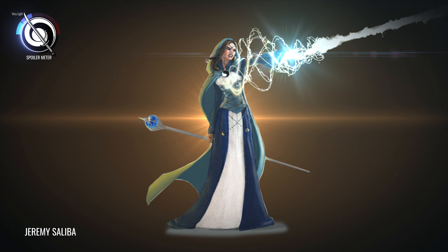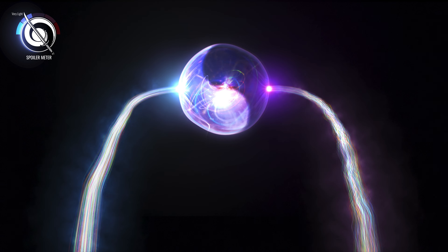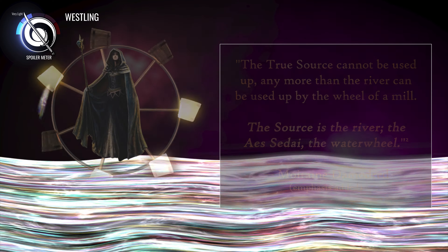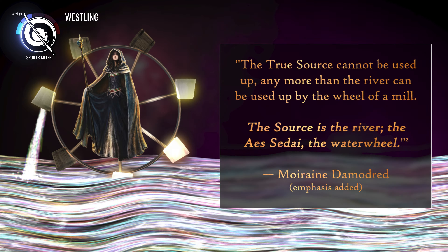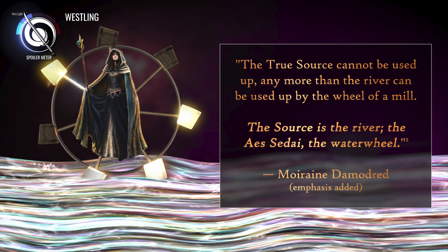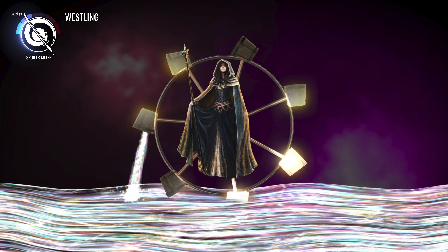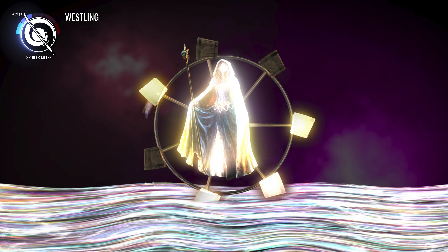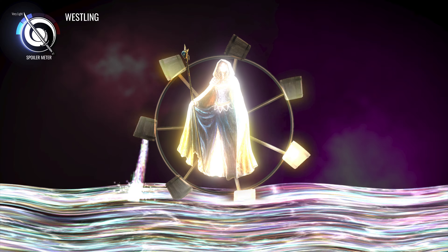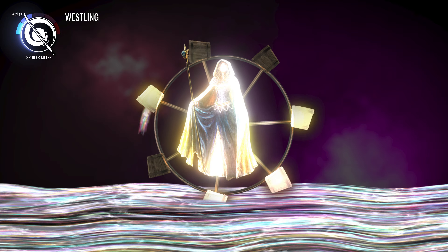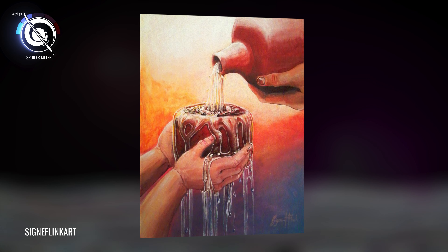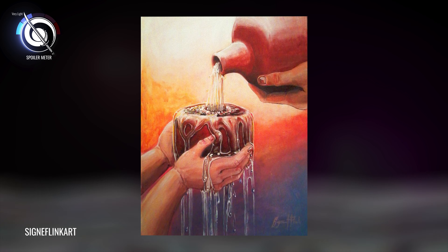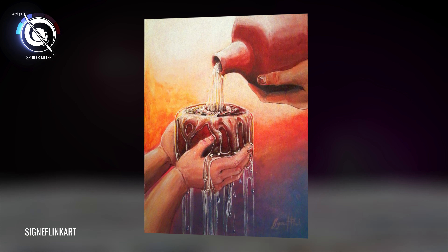A channeler is like a waterwheel that pulls water — or in this case, the One Power — from the river of the true source. Once the channeler has access to the river of the true source, they can fill themselves with the One Power, just as a vessel from a waterwheel fills with water. And just as a water vessel is limited by how much water it can hold, so too is there a limit to how much of the One Power a channeler can hold and use unaided.